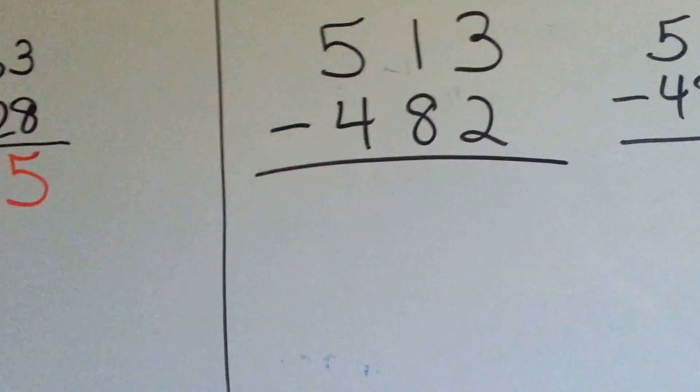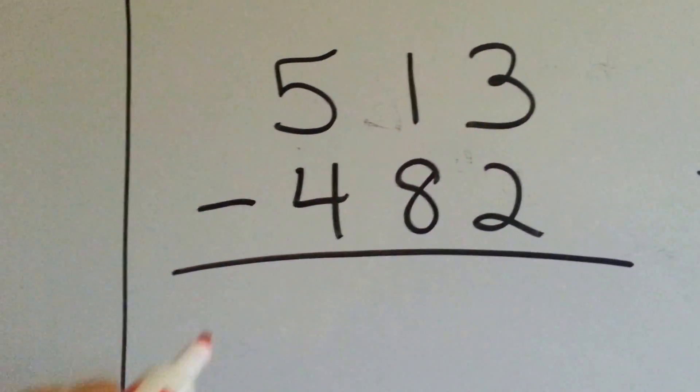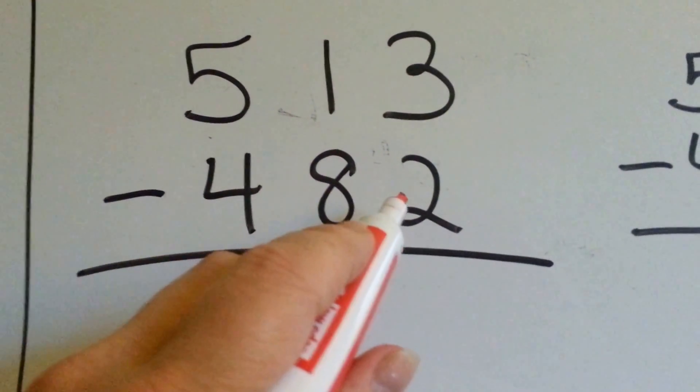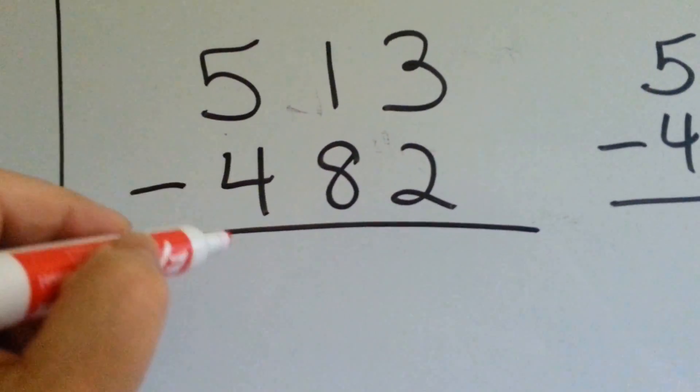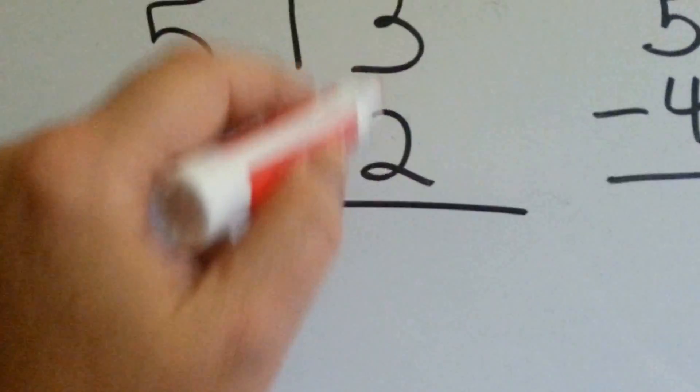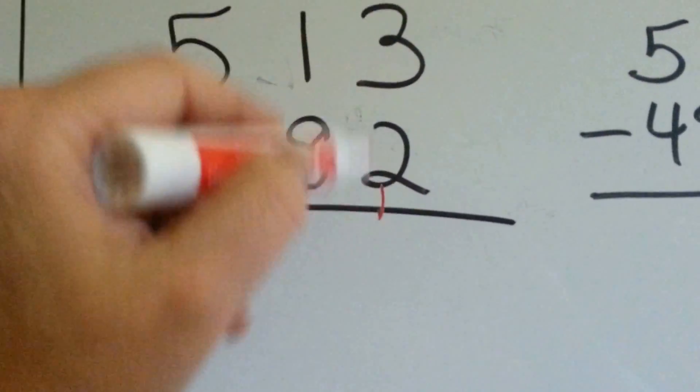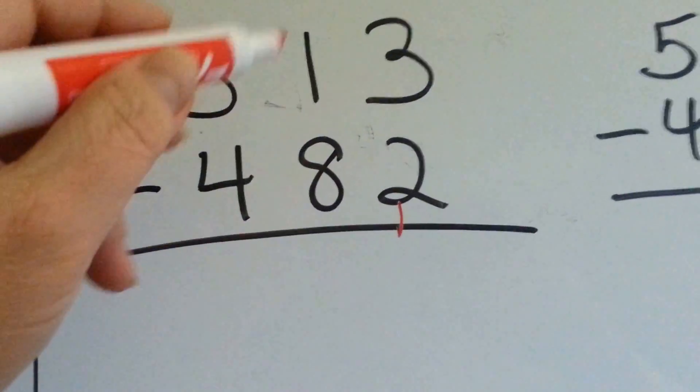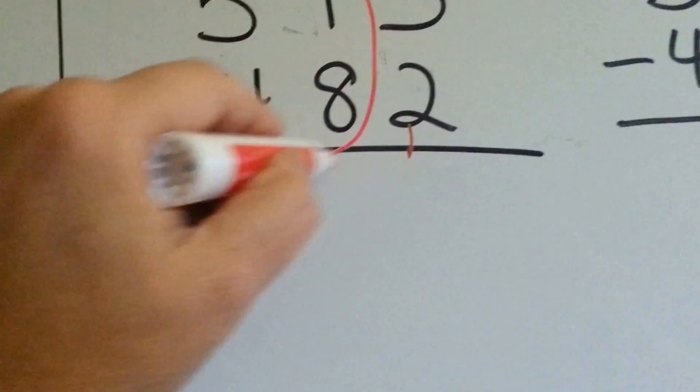Let's try another one. We have 513 minus 482. Now, in this one, it's not the ones column that is hard to do. It's the hundreds and the tens column. Do you see the problem here?